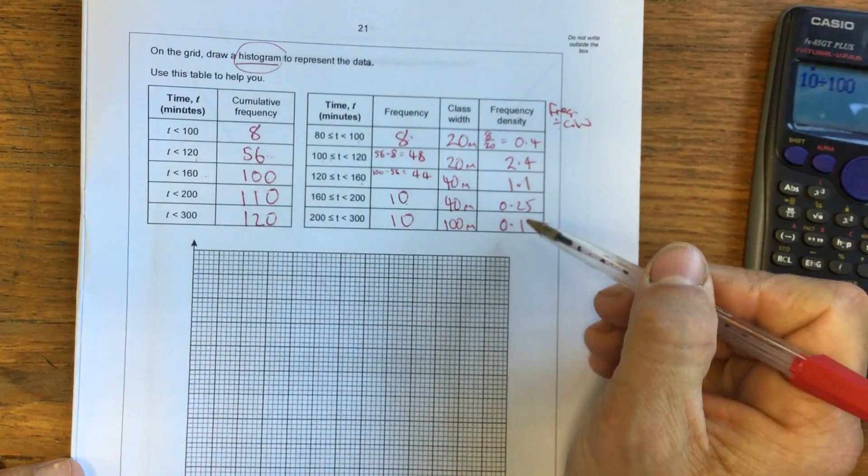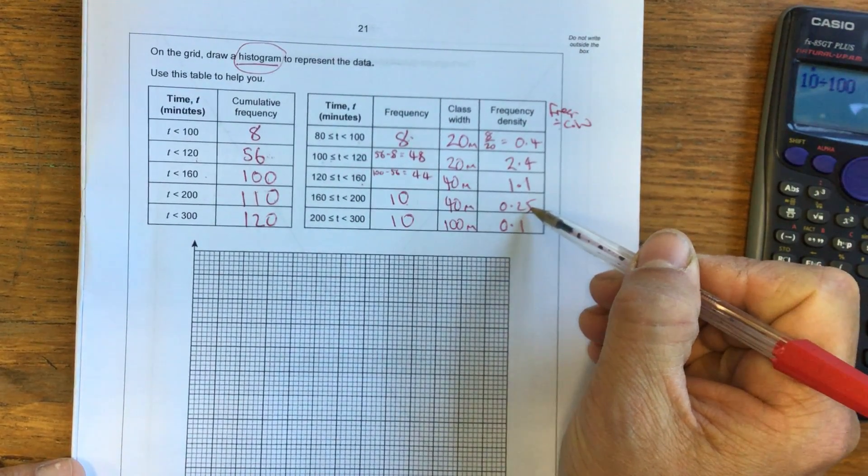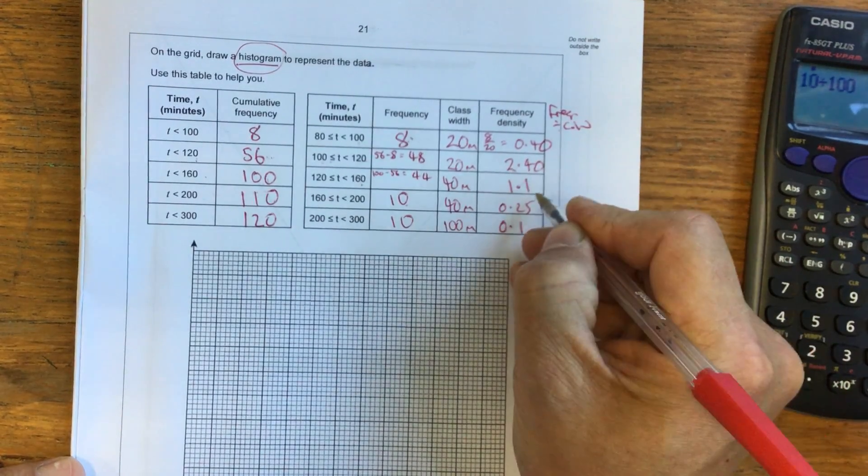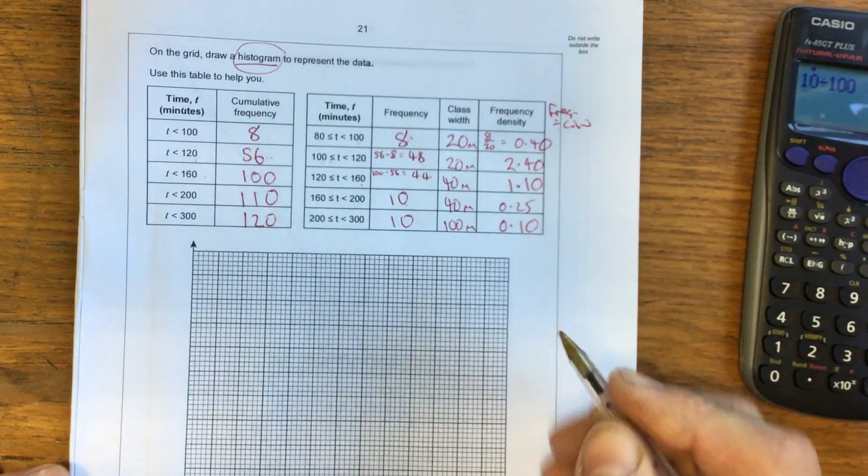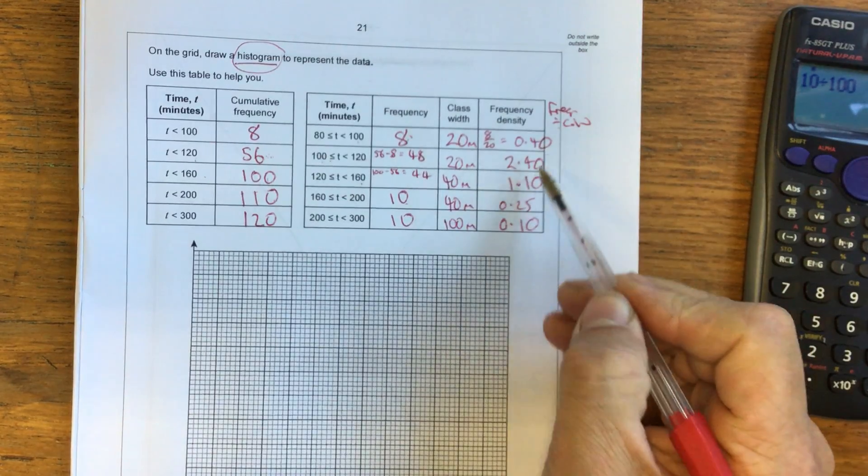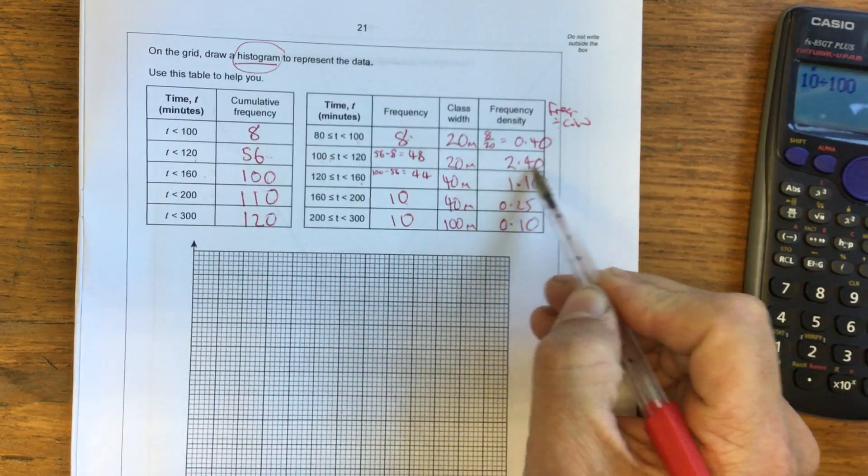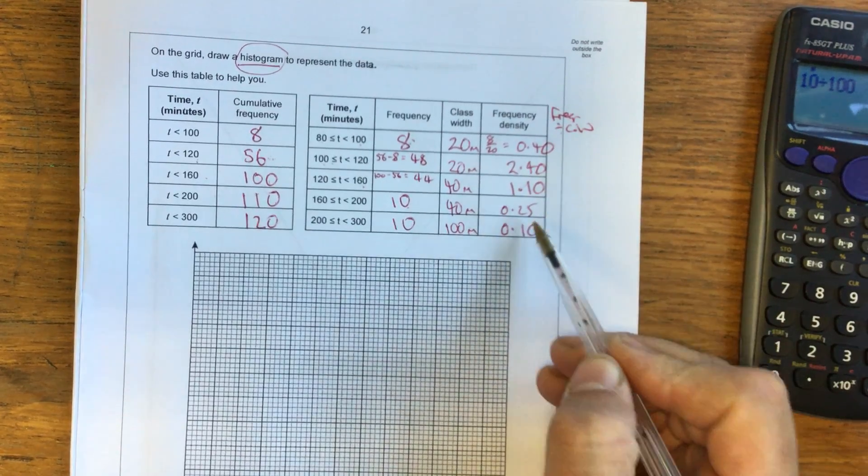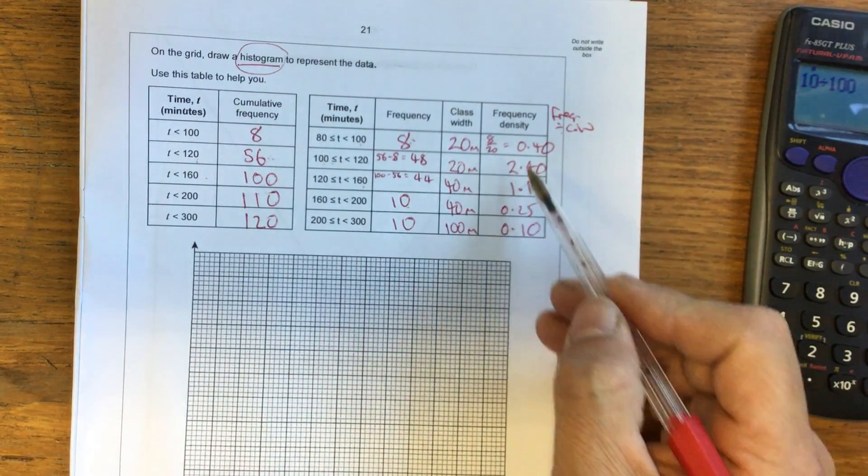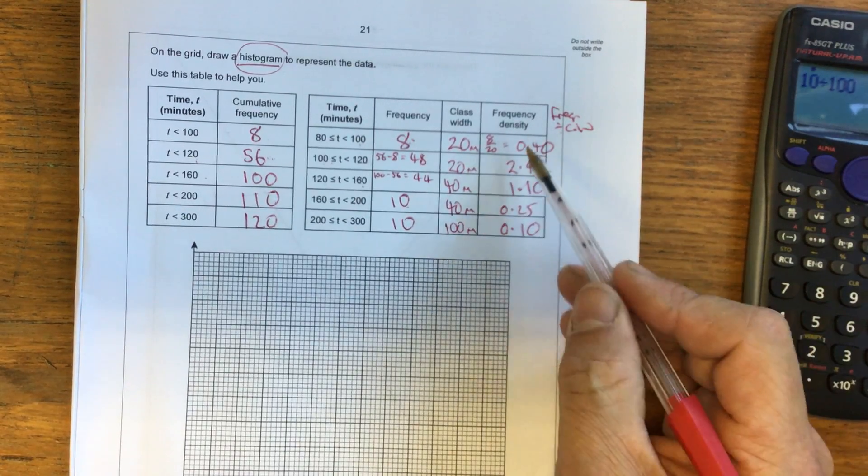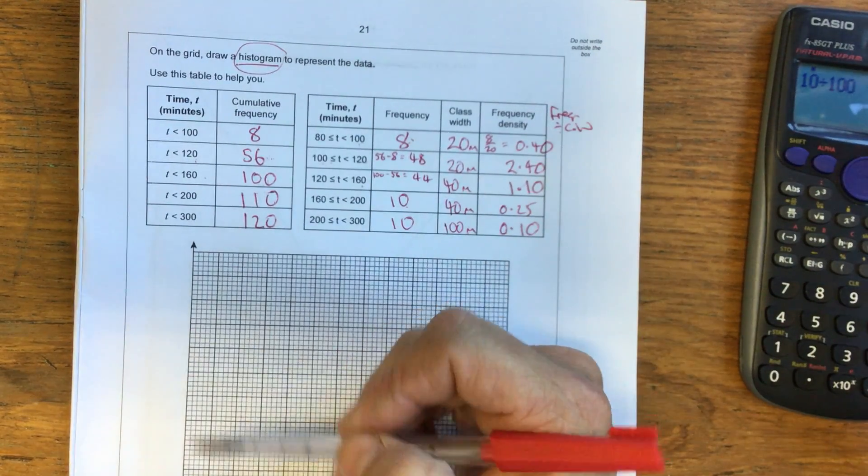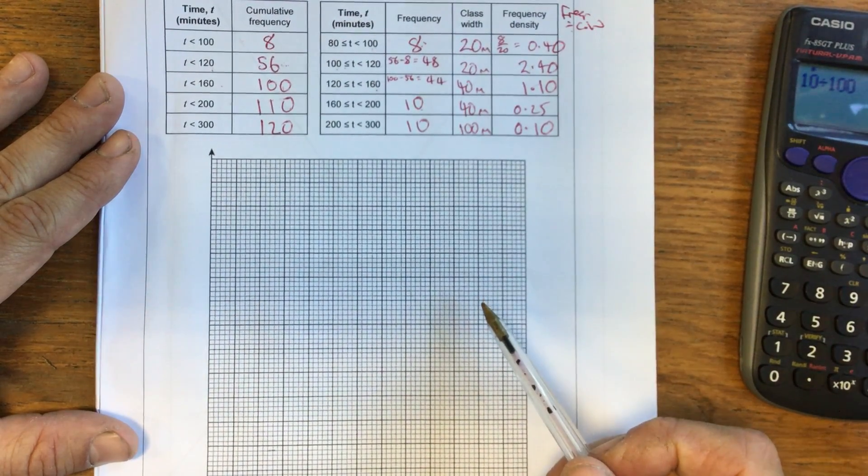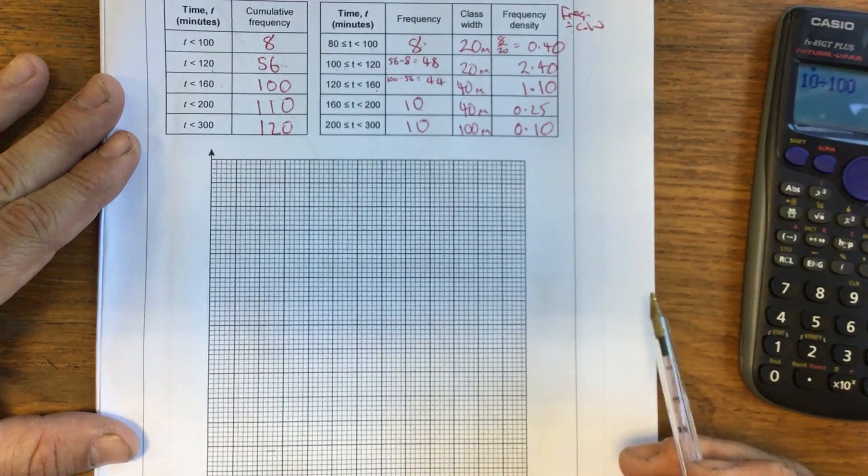Right. So now these decimals, you've got two decimal places for this one and one for the rest. So what I'm going to do, just to make life easy for me, I'm going to give them all two decimal places. So it makes it a bit easier to compare the numbers. And the reason I've done that is we're now going to have to put these numbers on a scale, on an axis. And it'll just be easier to think about it in terms of having them all the same number of decimal places.